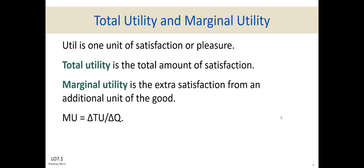One util is one unit of satisfaction or pleasure. Total utility is the total amount of satisfaction. Using the pizza example: the first pizza gives you 10 utils and the second gives you 8 utils. If you want to calculate total utility from consuming 2 pizzas, it's 10 plus 8, which equals 18. So total utility is the sum of all utilities from consuming each unit of the same good.